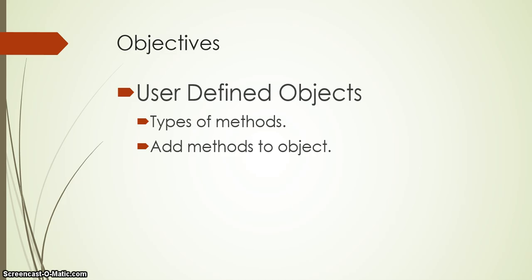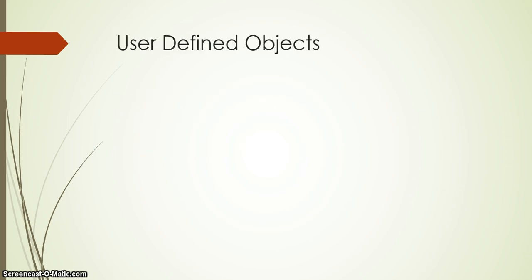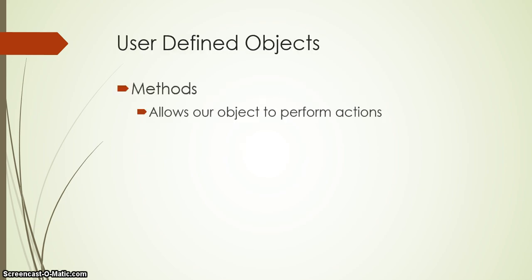Today we're going to look at the methods — these are the actions that are performed by an object. We'll look at the different types of methods, and as we learn about them we're actually going to create a method in our dog show example. First of all, just to remind ourselves: methods allow our object to perform an action.